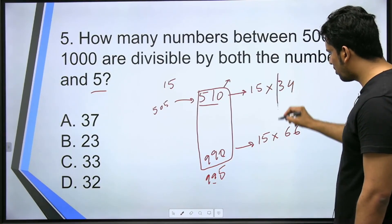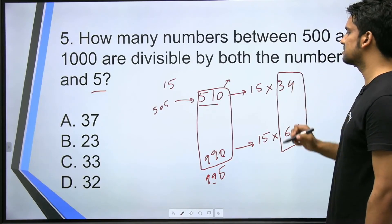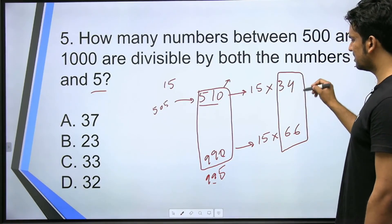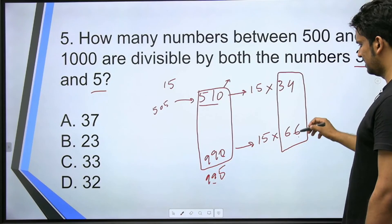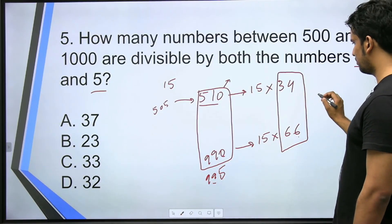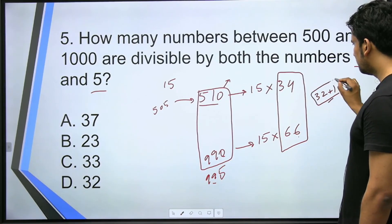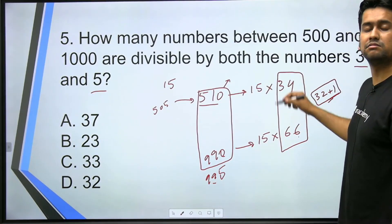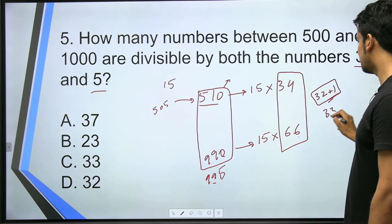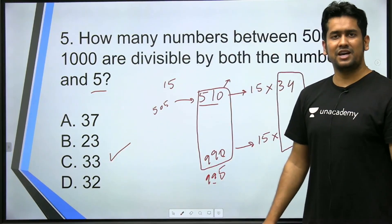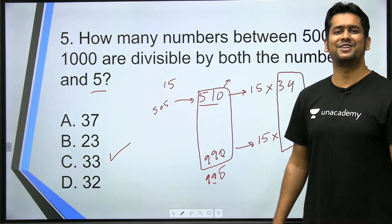So basically we are counting from 34 to 66. So how many numbers are there from 34 to 66? We just have to subtract. 66 minus 34 will come out to be 32 plus 1 because we are counting both the numbers. So that's why the answer is 33. Okay. Thank you so much. See you in the next video.